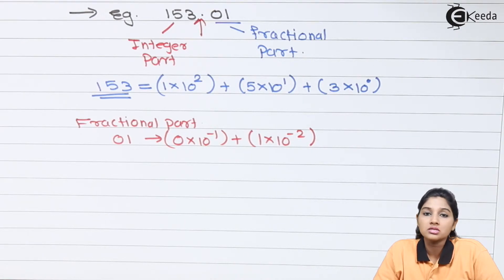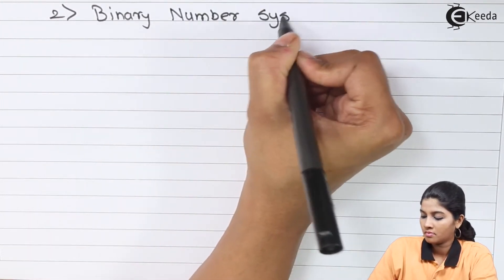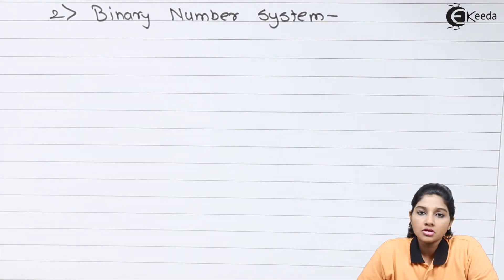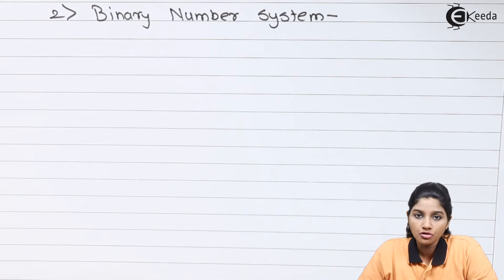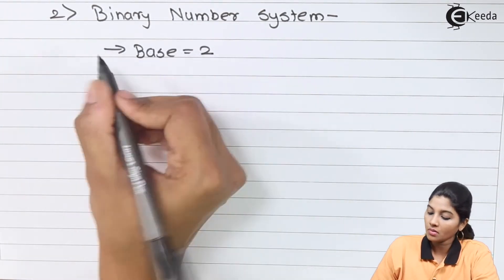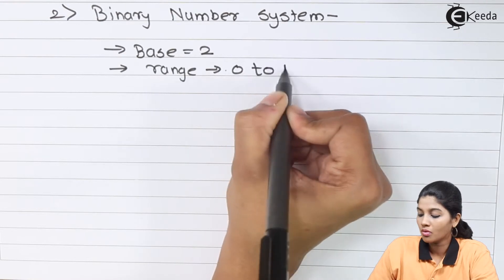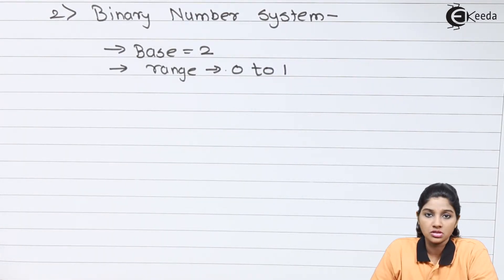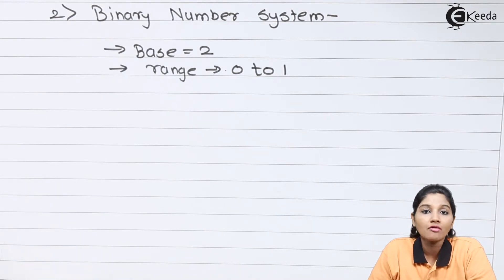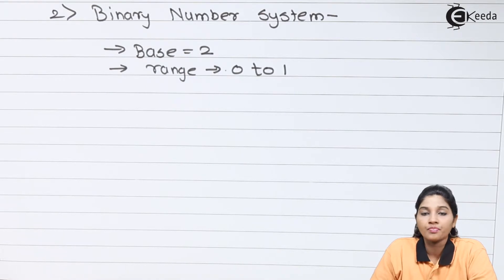Now let's move to the binary number system. Binary number systems are most commonly used in digital circuits and digital communication. The binary number system has a base or radix equal to 2, so the range is from 0 to 1 — it consists of only 2 numbers, which are 0 and 1. As we have already seen, decimal 8 is represented in binary as 1,0,1,0,0,0, meaning only 0s and 1s are used.